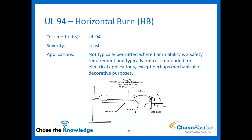Going into a little more detail on each rating. Horizontal burn HB: the specimen is clamped at the end and burns from the right-hand side. This is the least stringent. It's not typically permitted where flammability is an actual safety requirement. With the exception that perhaps the part is used for purely mechanical or decorative purposes, outside of that we have to start looking at materials with better flame ratings that will extinguish the flame more effectively.